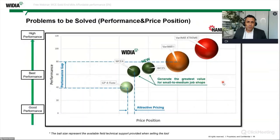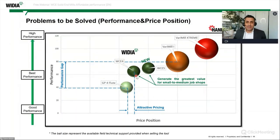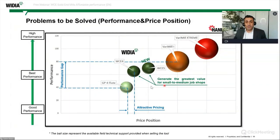For performance and price positioning of the WC4 and WC5: the Hanita brand sits at top-right — high performance, high price. Products like Watermill Extreme represent that level. Below that is Watermill, and then on the left, general purpose four-flute tools at lower performance and price. There was a performance-price gap in the middle, and that is where we position the PV products — WCE4 and WCE5 — offering the greatest value for small to medium job shops: lots of technology and performance for a good, attractive price.